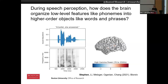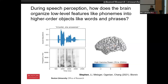This is what's called a dynamic binding problem — how you put these individual features together and say, these features correspond to this word, these features correspond to this other word. We're going to try to update our model to try to get at questions related to that.